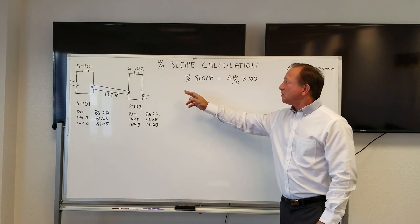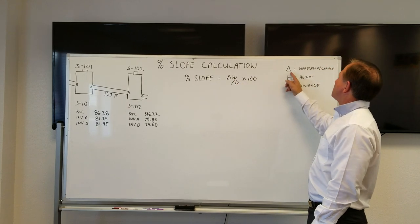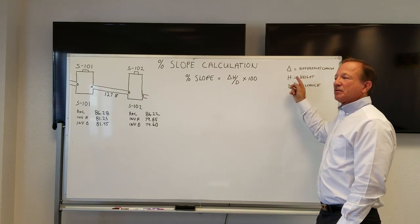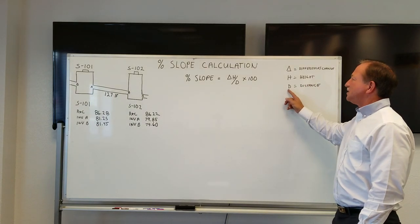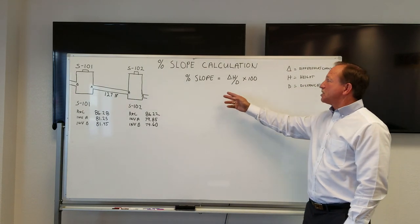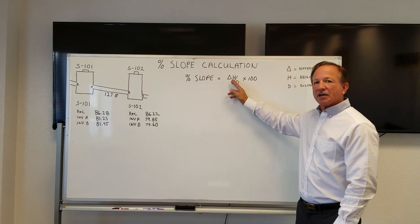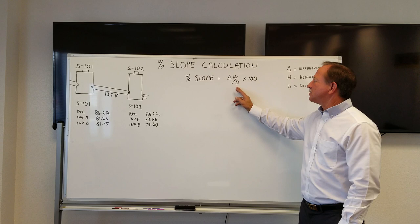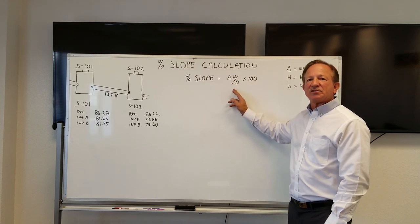Well that's a nice little formula, but what does all this fancy little stuff mean? Very simple. The percentage of slope is calculated by determining Delta, which means difference or change in height. H is the height, D is distance. So the equation reads: the percentage slope is equal to the change in height divided by the distance times 100.